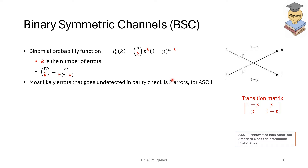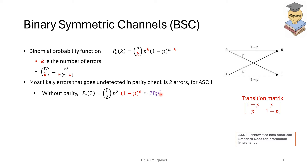For parity check — single parity bit, odd or even — the most likely undetected error is two errors, because higher-order errors have smaller probability. For ASCII (American Standard Code for Information Interchange), using 8-bit representation — seven bits for characters and one parity bit — the probability of two errors is 8-choose-2 times p^2 times (1-p)^6, which is approximately 28p squared. The uncoded system's dominant error is one error: 7-choose-1 times p times (1-p)^6, approximately 7p.